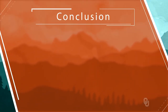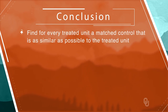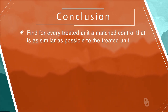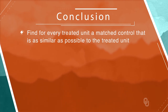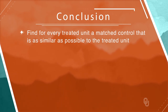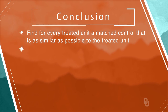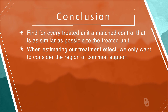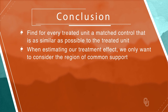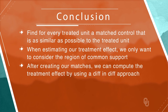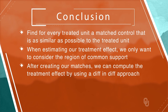Let's sum up what we learned about propensity score matching. First, the idea is to find, for every treated unit, a matched control that is as similar as possible to the treated unit. We do this by collapsing similarity down to an estimated probability of treatment variable, called the propensity score, and use that to match. When estimating our treatment effect, we only want to consider the part of the distribution of treated units that overlaps the distribution of control units — what we call the region of common support. After creating our matches by nearest neighbor or kernel methods, we can compute the treatment effect by comparing the average difference in outcome between the two groups, or by using a diff-and-diff approach.